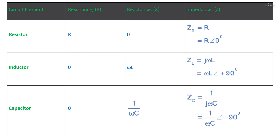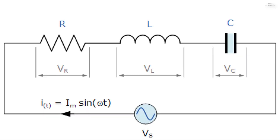Instead of analyzing each passive element separately we can combine all three together into a series RLC circuit. The analysis of a series RLC circuit is the same as that for the dual series RL and RC circuits, except this time we need to take into account the magnitudes of both XL and XC to find the overall circuit reactance. Series RLC circuits are classed as second-order circuits because they contain two energy storage elements: an inductance L and a capacitance C.